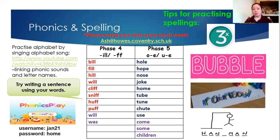Tips for practicing those spellings: writing them out three times using look, cover, write and check; bubble writing of those words; rainbow writing of those words — reinforcing and practicing the order that those letters come in. You could also get somebody at home to play hangman with you, practicing the letter order. You could also try writing a sentence using your words, thinking about how you would use it in your real writing. And then on Friday, try and get somebody at home to test you on those spellings, then don't forget to email them through to me at ash.howles.commentary.sch.uk.